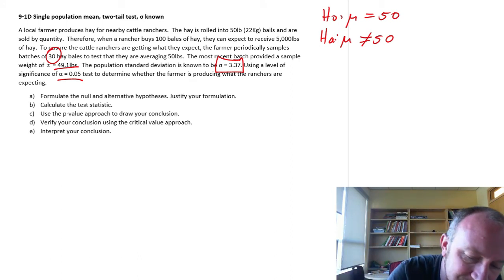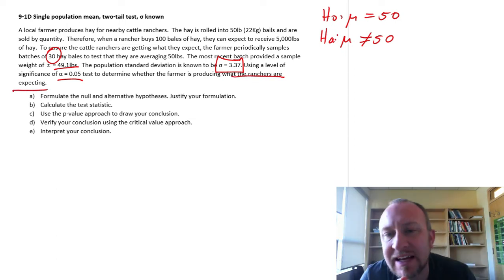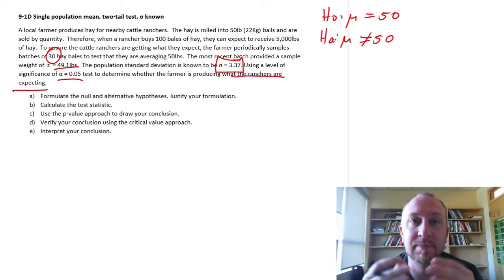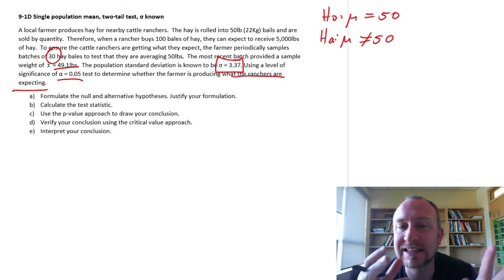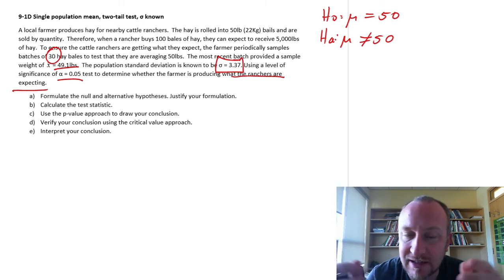It's simply saying that we're producing what they are expecting. It's not saying are the bales of hay at least 50 pounds, no more than 50 pounds. Things like that would indicate that we're doing a one-tailed test. Here we're just testing is it what they're expecting. So is it 50 pounds or is it not 50 pounds?